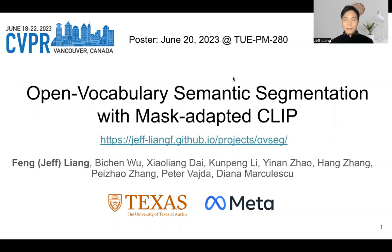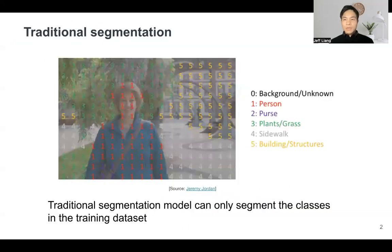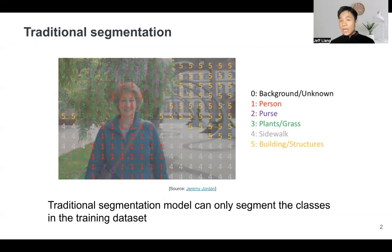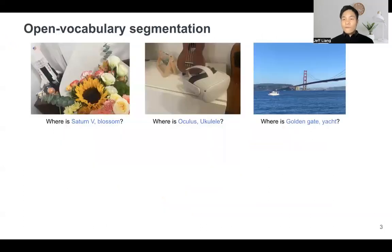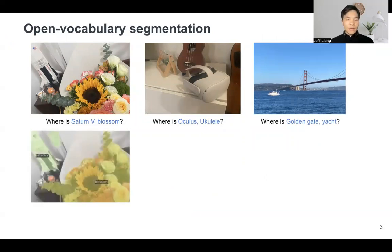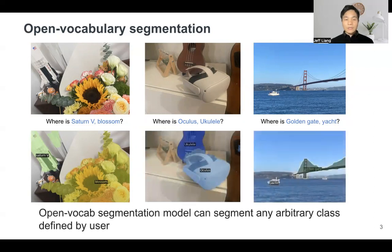If you are interested in our paper, please come to see our poster on June the 20th. Traditional segmentation models have made a lot of progress. However, these traditional segmentation models can only segment the classes that are well defined in the training dataset. We humans understand the world in an open vocabulary way, so this work focuses on open vocabulary segmentation where our model is able to segment anything with arbitrary classes — for example, Saturn V, Oculus, and Golden Gate.